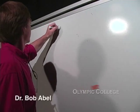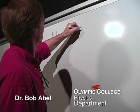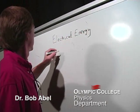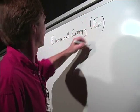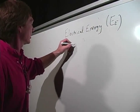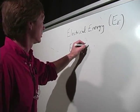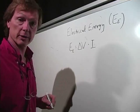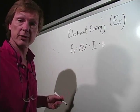Electrical energy, I'll call it E sub E. And electrical energy is the product of the voltage times the current times the time that you run the circuit.